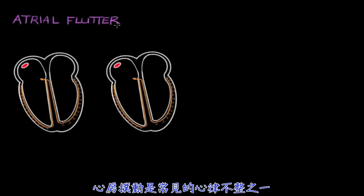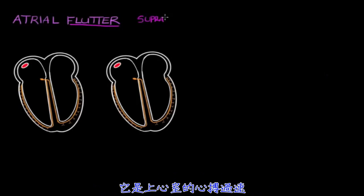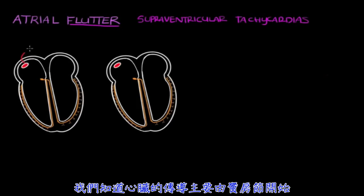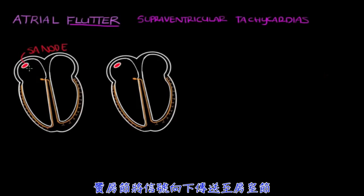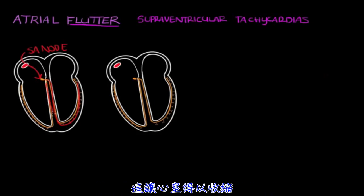Atrial flutter is one of the heart arrhythmias, also known as just flutter. It's one of the supraventricular tachycardias. The heart's dominant pacemaker is the SA node, which sends a signal to the AV node, which then conducts a signal down to the lower half of the heart, making the ventricles contract.